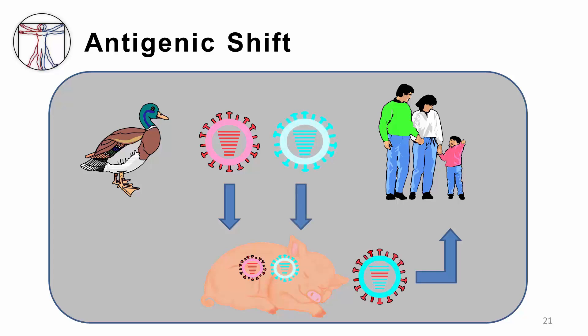The other mechanism of antigenic shift occurs when influenza A from two different species infect the same cell. When this happens, entire segments of the influenza RNA genome may be swapped between the different influenza virus strains. Again, birds are a common source of these new RNA segments, but the reassortment event often occurs in pigs because they can be infected with both avian and human strains of influenza. Reassortment can occur in humans as well, but this is thought to happen less often.